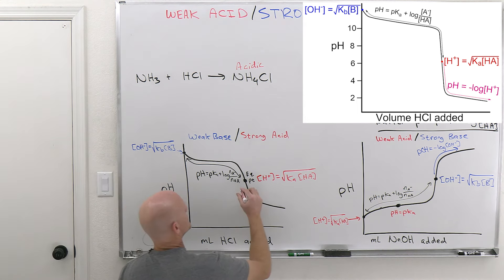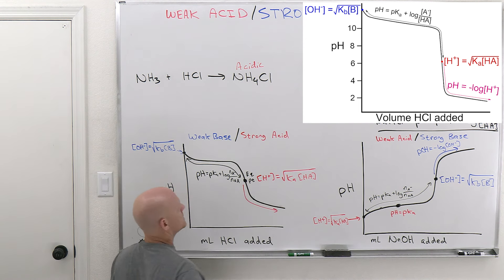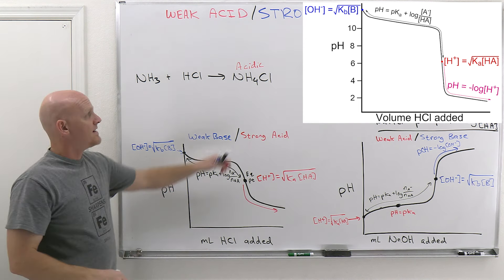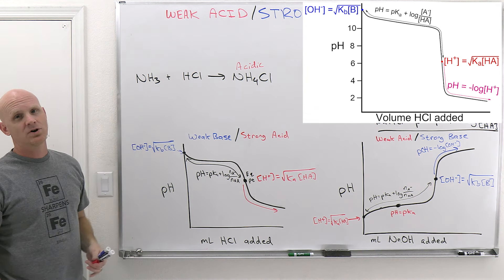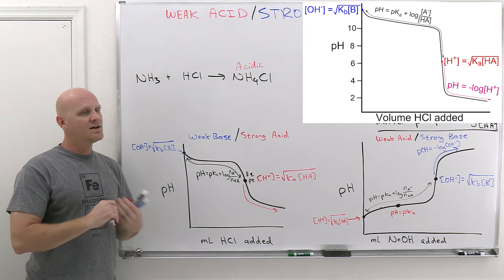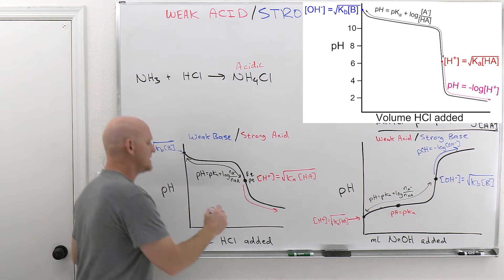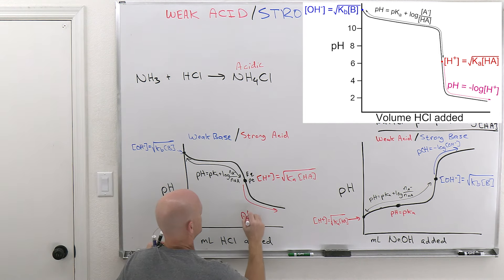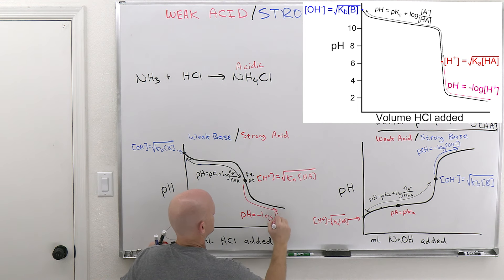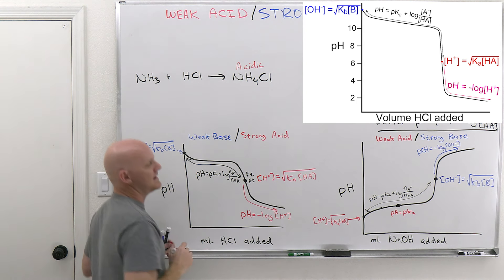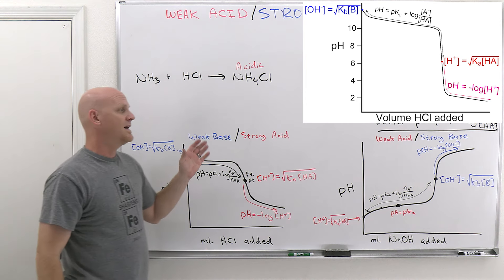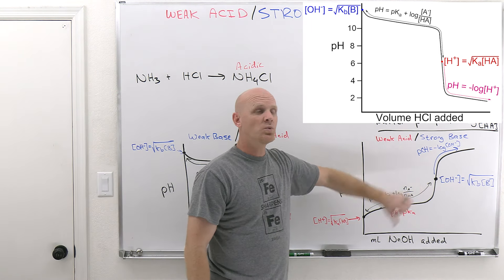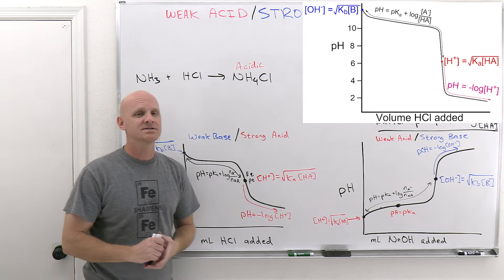Beyond the equivalence point, you'll have excess strong acid plus weak acid. Just as we did with strong base, ignore the weak acid and use only the excess strong acid concentration to take the negative log and get the pH directly. It is totally analogous for weak base strong acid titrations to what we saw with weak acid strong base titrations.